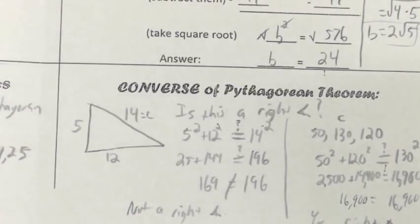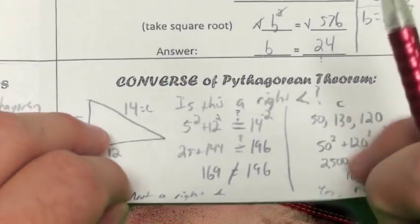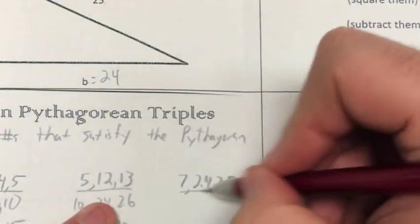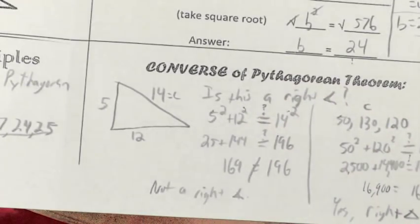Which, again, you wouldn't necessarily have to do the work if you recognized that this is a Pythagorean triple because it is simply 5, 12, 13 times 10. 5 times 10 is 50, 12 times 10 is 120, 13 times 10 is 130. So that's it, pretty simple lesson for today.